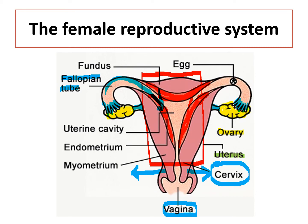Coming back to the ovaries, they generally start to produce a large amount of estrogen and progesterone in a girl when she is around 10 to 12 years old, which brings on the onset of puberty. The primary characteristic of puberty in females is the production of an egg cell. Secondary sexual characteristics include the widening of the hips, the development of the breasts, an increase in height, and the development of hair in certain body regions.